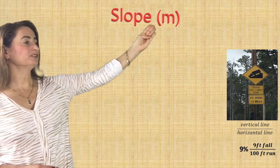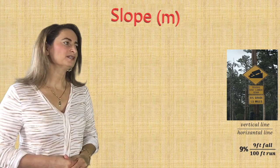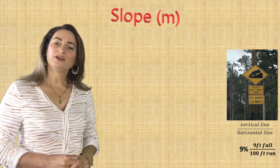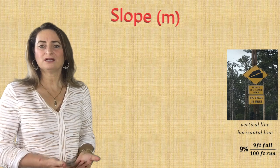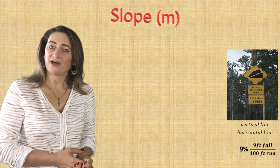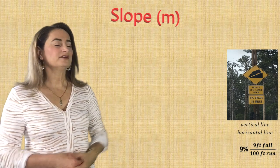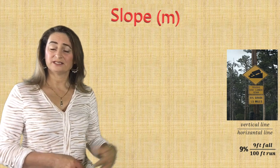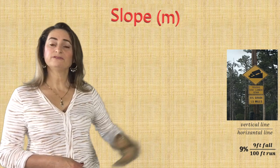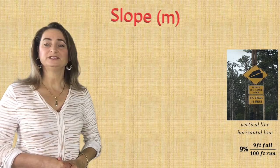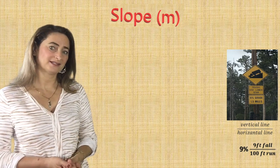Slope — we refer to it with the letter M, and we always see this sign on the road for truckers. It says 9% grade for the next one and a half miles. Why is this important to know? Because trucks cannot go fast on a steep slope. To find the slope, it's the vertical line divided by the horizontal line. So 9% means 9 feet fall for every 100 feet run.